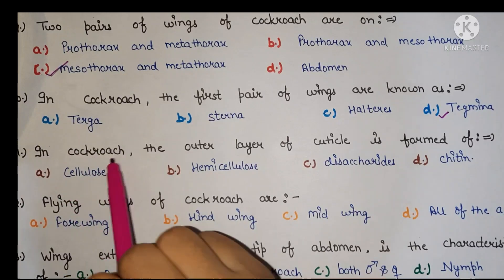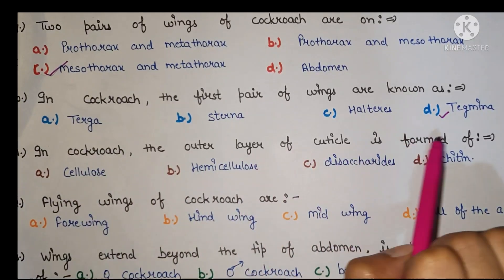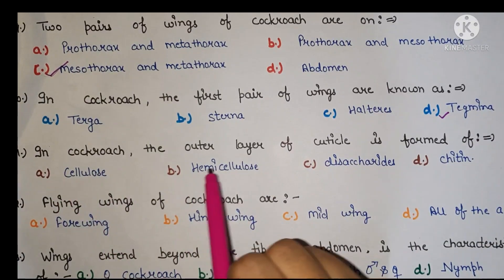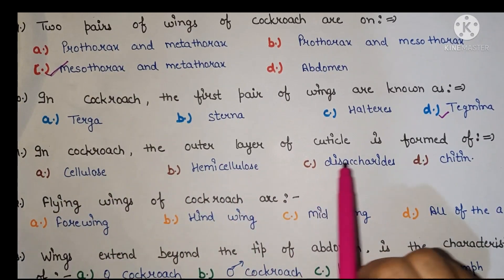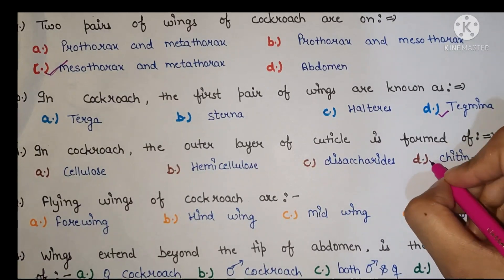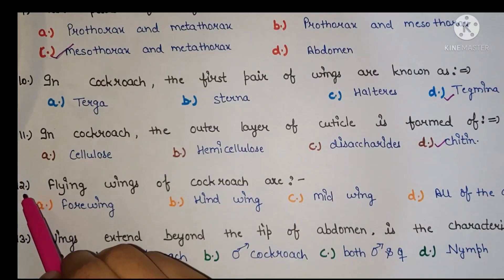Next, in cockroach the outer layer of cuticle is formed of A cellulose, B hemicellulose, C disaccharides, D chitin. Right answer is chitin.